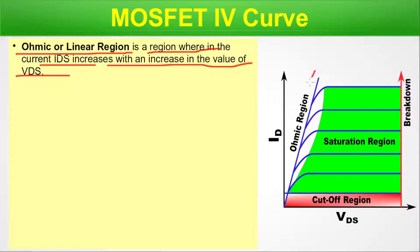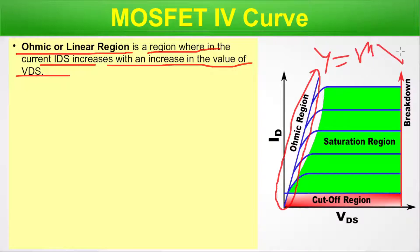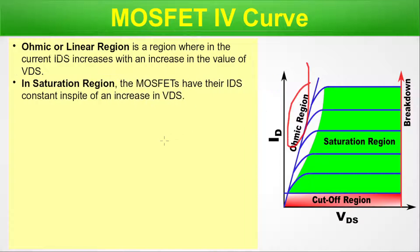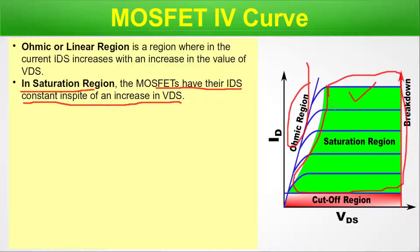In the saturation region, the MOSFET has its IDS constant in spite of an increase in VDS. Here in the green-colored region — the saturation region — no matter how much we increase the VDS, the IDS remains constant at each curve. Saturation sets in once VDS exceeds the pinch-off voltage VP. Under this condition the device acts like a current source through which the saturated value of IDS flows.